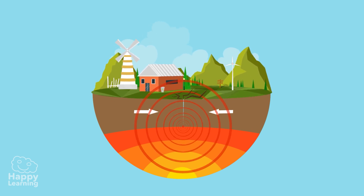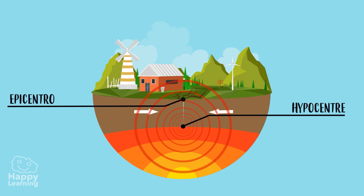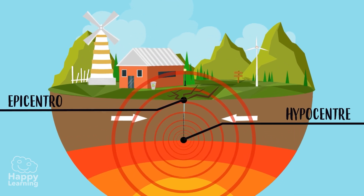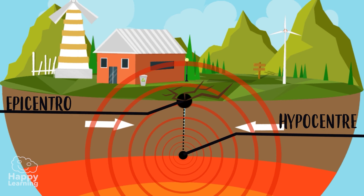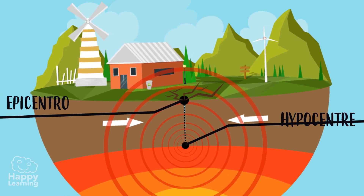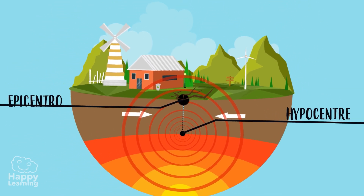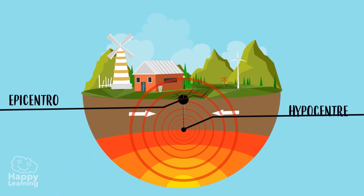In an earthquake, we could differentiate two parts. The hypercentre, which is the point in the Earth where the earthquake originates from. And the epicentre, being the point on the Earth's surface vertically above the hypercentre. This point is where the earthquake is most intense and the greatest damage is caused.